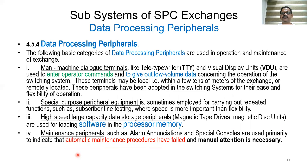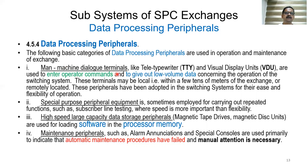Data processing peripherals are used in operation and maintenance activities of a telephone exchange. Man-machine dialogue terminals, like teletypewriters and VDUs, are used to enter operational commands and to receive low-volume data concerning the operation of the switching system. These terminals may be local — within a few tens of meters of the exchange — or remotely located, enabling centralized control of multiple exchanges.